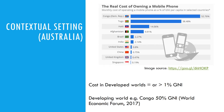In developed countries, the cost of owning a mobile is less than in some developing nations. In developed worlds it can be less than 1% of income, whereas it can be up to 50% in developing worlds such as Congo.